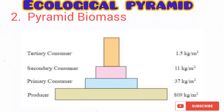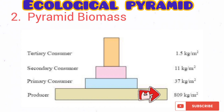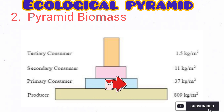Let's take a look at pyramid of biomass. In pyramid of biomass, instead of measuring the numbers in each trophic level, you just measure the organic matter or the biomass in each trophic level. In other words, you measure the dry mass or the mass of organic matter present in each trophic level. As you can see from the diagram, the producers actually have 809 kilograms per unit area or per meter square. The primary consumers have 37 kilograms per unit area or per meter square. Note that the dry mass can be measured in grams per unit area.